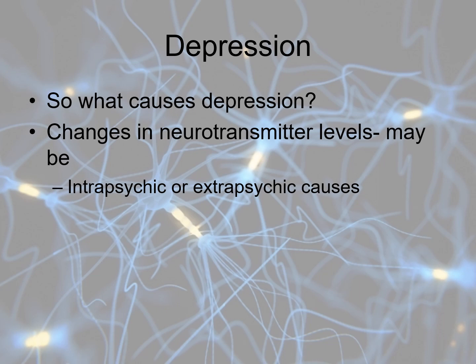Some people seem to be born with inadequate neurotransmitters. When I ask depressed patients about family history, they often say their mother, grandmother, and aunt are all depressed. While the evidence isn't overwhelmingly strong, it's a reasonable theory that some people either just don't produce enough serotonin or their systems are easily overwhelmed.